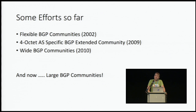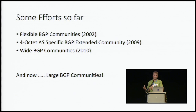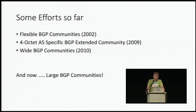Another interesting effort is to reuse some of the extended communities, but the extended communities are not really big — you have 6 bytes to play with. So it kind of means that if you use the first 4 bytes to put the peer's ASN in, that only leaves 16 bits of stuff to play with, and 16 bits is not enough to describe the network actions that most operators have.